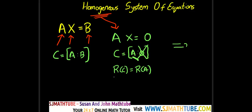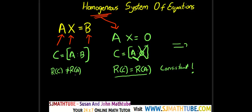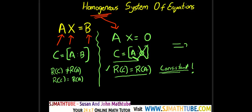In other words, the homogeneous system is always consistent. Earlier we learned that if rank of C is not equal to rank of A, then the system will have no solution. But the last column being all zeros gives us a very interesting result: rank of C will equal rank of A, and that means our system will always be consistent.